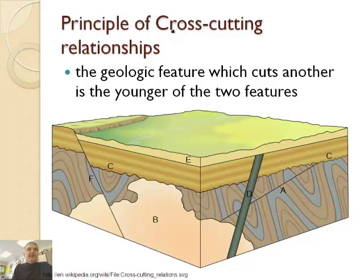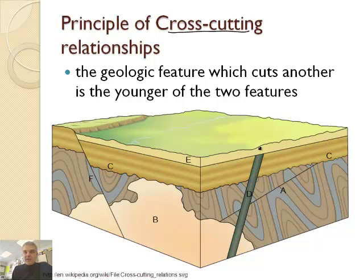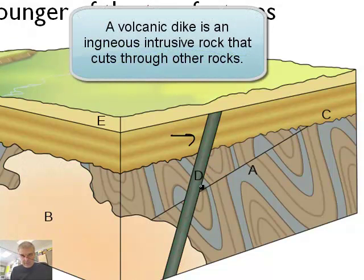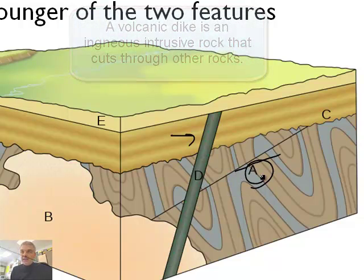The principle of cross-cutting relationships — we're not talking about a saw that cross-cuts. This is a geologic principle: a feature which cuts another is the younger of the two features. So if you see a feature that cuts through other features, it is younger. The classic example of this would be section D right here. D is what we call a volcanic dike — it's like a tube of volcanic igneous rock that comes through.